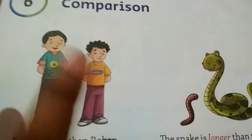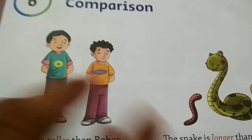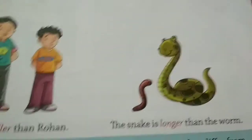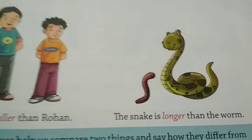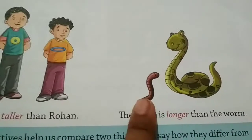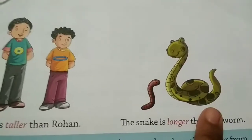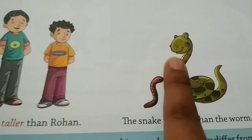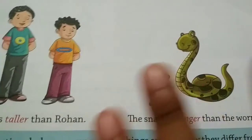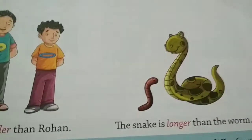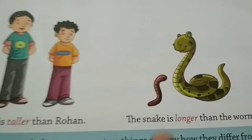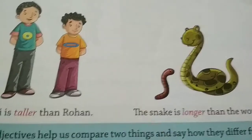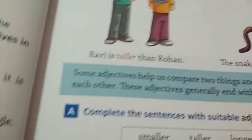We look at the quality of two things. Then, a snake is longer than the worm. This is the worm and this is the snake. The snake is longer, meaning it has greater length, and the worm is shorter.